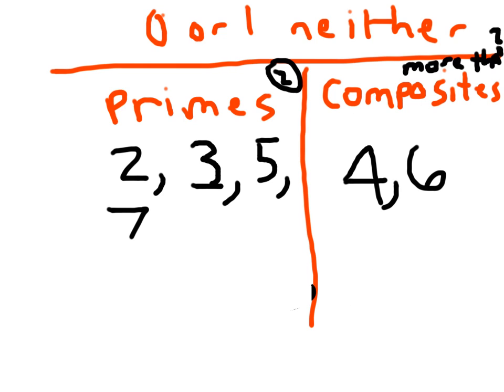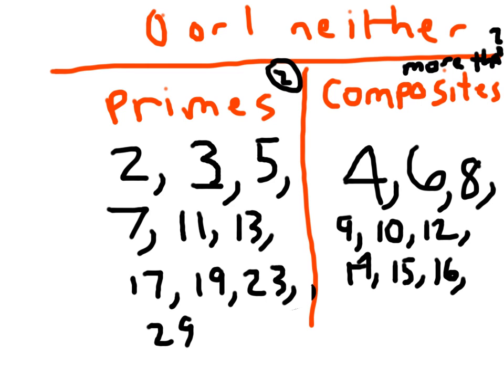Welcome back! Up to 30 as prime or composite — where did you sort each number? I listed the prime numbers: 2, 3, 5, 7, 11, 13, 17, 19, 23, and 29 as being prime.